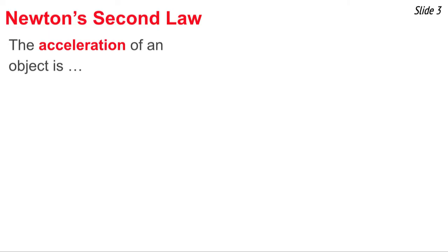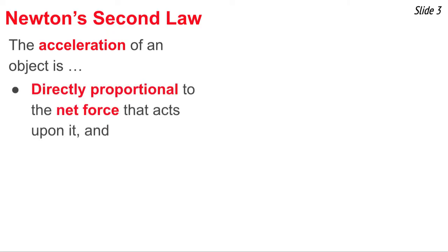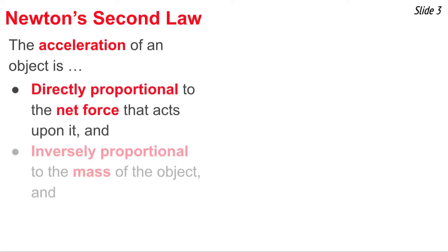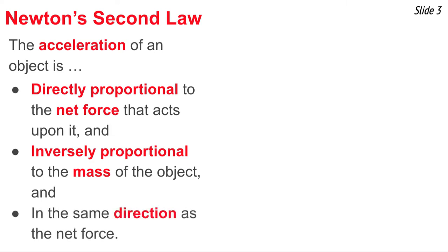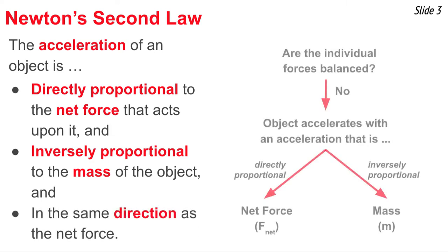In an earlier video, we discussed Newton's Second Law of motion. We learned that the acceleration of an object is directly proportional to the net force that acts upon it, inversely proportional to the mass of the object, and in the same direction as the net force. If the individual forces acting upon an object are not balanced, the object will accelerate, and that acceleration depends on the net force in a directly proportional manner and on the mass in an inversely proportional manner.